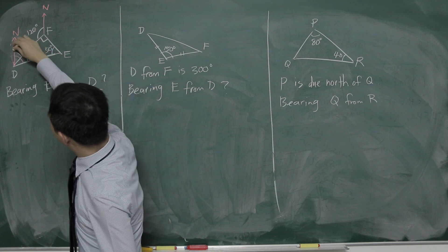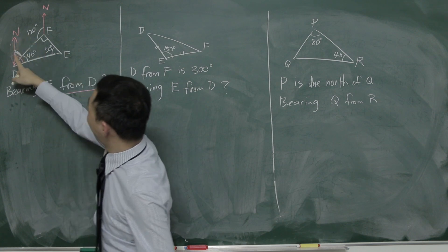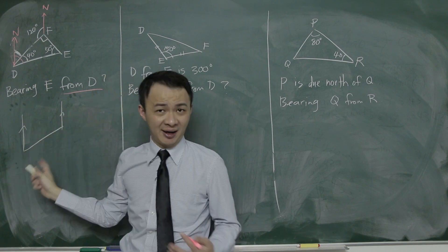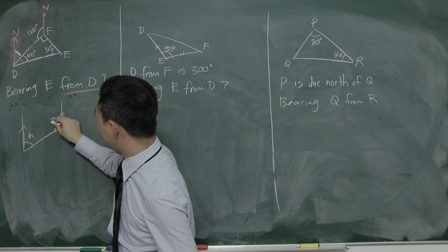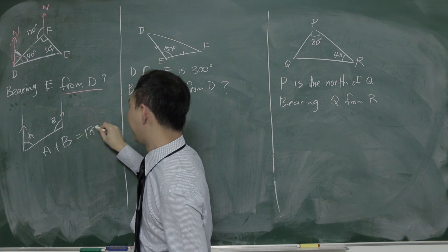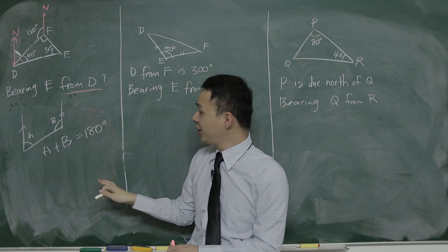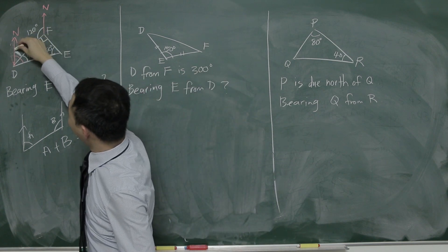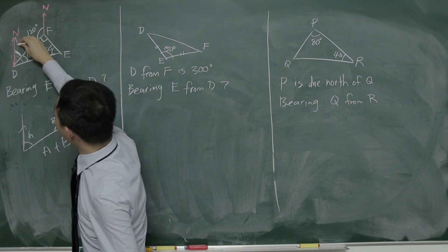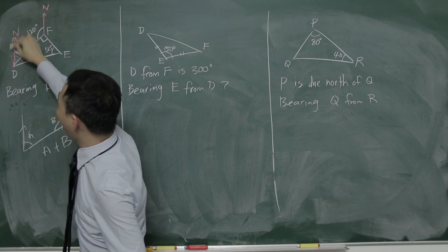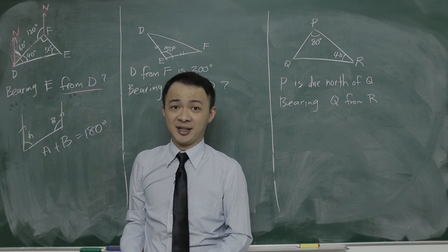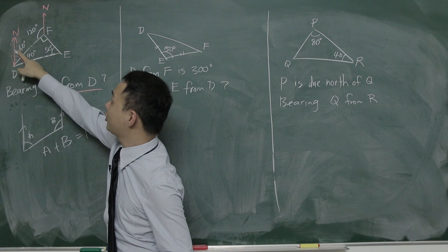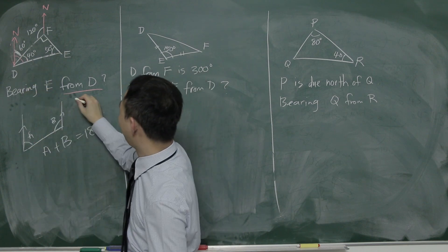I need to find the angle above at D. In this topic, you use the rule that if two lines are parallel, the co-interior angles must always equal 180°. So if one angle is 120°, the other must be 60°. Because the two north lines are parallel, these two co-interior angles plus together equal 180°. So here is 60°, and here is 40°. The total bearing is 60 plus 40, which gives 100. So the bearing is 100°.